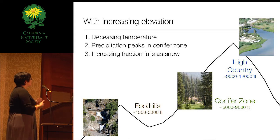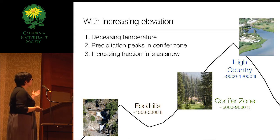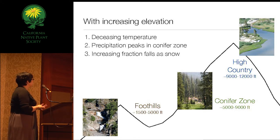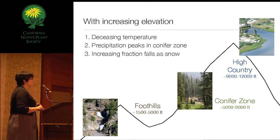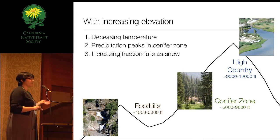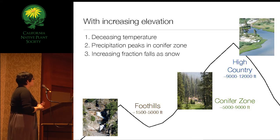To give you an idea of what it's like in Sequoia: with increasing elevation, you have decreasing temperature, and precipitation peaks around the conifer zone. But as you increase in elevation, there's an increasing fraction falling as snow. In the foothills, you're mainly getting precipitation as rainfall, and as we go up, that changes to snow.